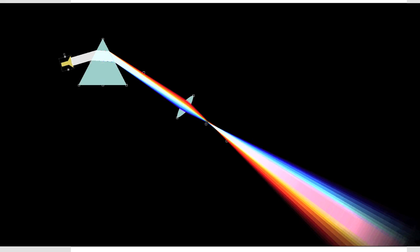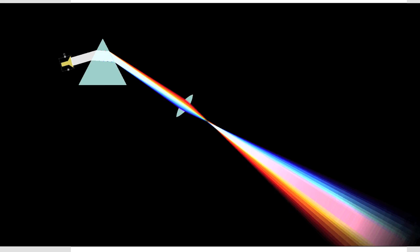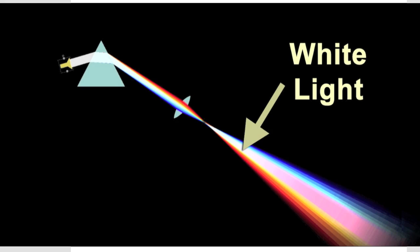And sure enough when he did that, he found that the colors of the rainbow recombined into white light. So this proves that white light is made up of all the colors of the rainbow.